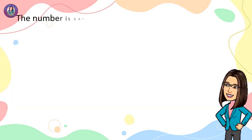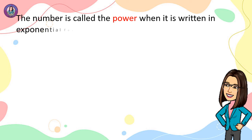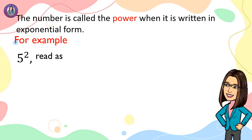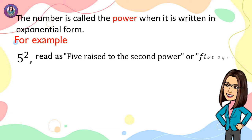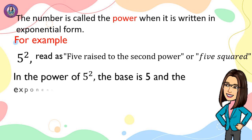The number is called the power when it's written in exponential form. For example, this is read as 5 raised to the 2nd power or 5 squared. In the power of 5 squared, the base is 5 and the exponent is 2.